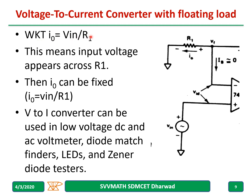This means the input voltage appears across R1 — whatever voltage you apply, the same voltage will appear across R1, and i_out can be fixed as i_out = V_in / R1. This voltage-to-current converter can be used in low voltage DC and AC voltmeters, diode match finders, LEDs, zener diodes, and various diode testers.